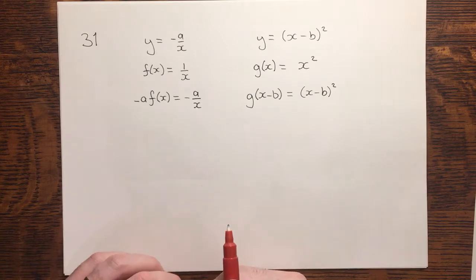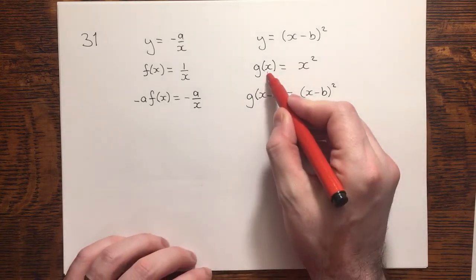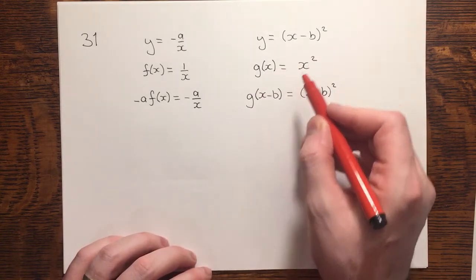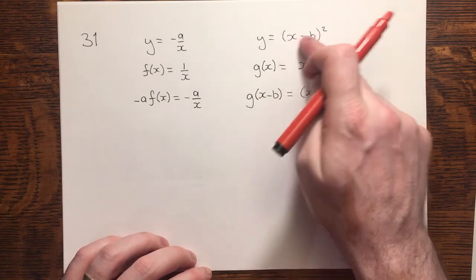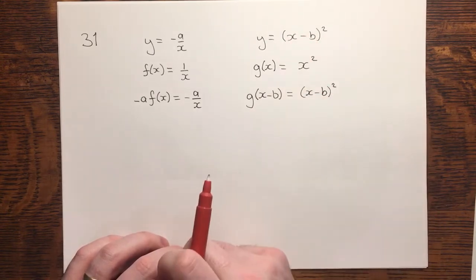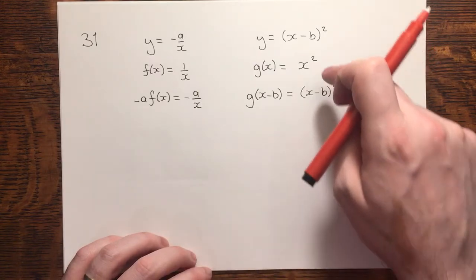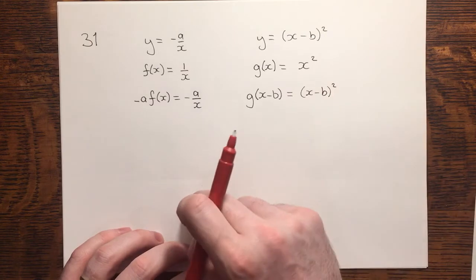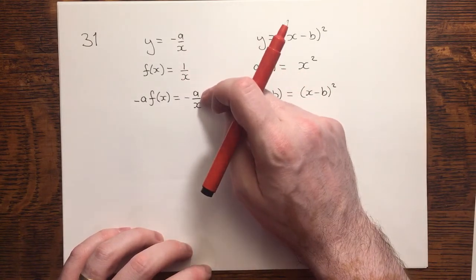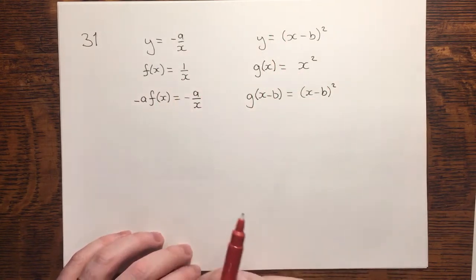If we look at those transformations for a moment, here we have x and x, and in the respective places x minus b and x minus b, which makes what we want. So that's the transformation that we need to turn x squared into x minus b all squared. And the transformation to turn 1 over x into minus a over x is this.